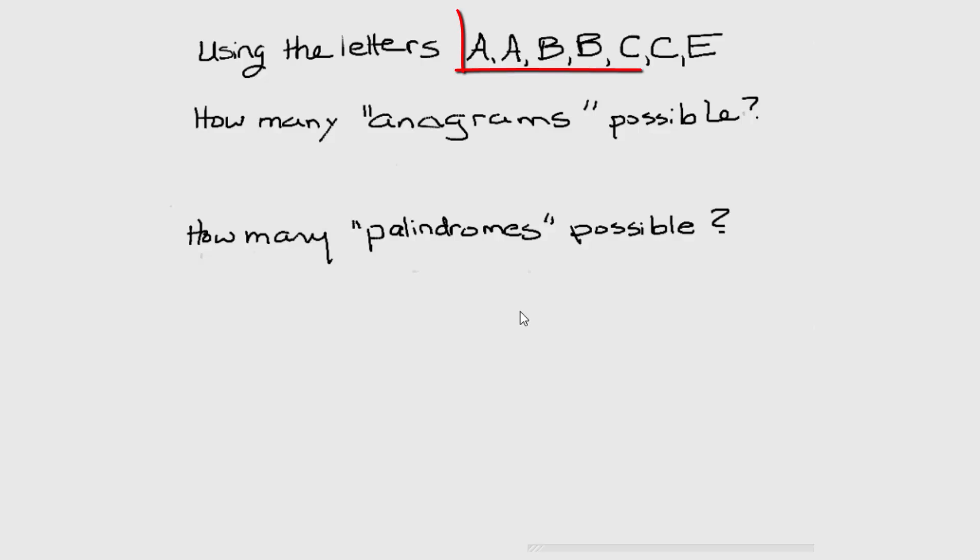Here we have a set of seven letters, including two A's, two B's, two C's, and an E. So if we're asked how many anagrams are possible using the entire set of letters, we're being asked to arrange seven letters.